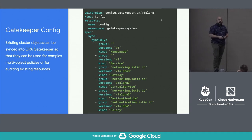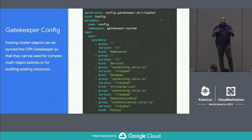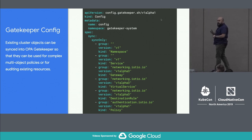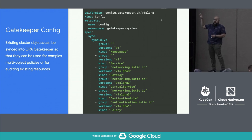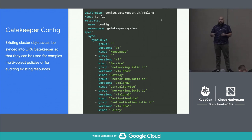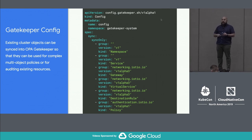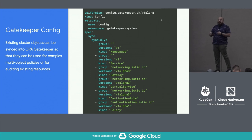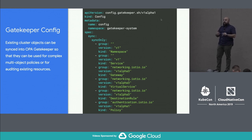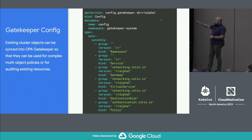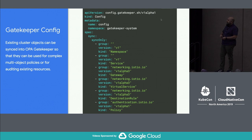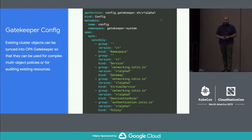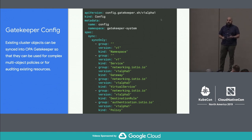There's one more piece to this puzzle: you've got to tell Gatekeeper how to capture some of these objects. To use the namespace selector, you've got to make sure you're synchronizing the data about namespaces into the Gatekeeper system namespace, so the Gatekeeper controller is basically caching the metadata about any of these objects. For multi-object policies, or situations where you want to audit something after it's been admitted, Gatekeeper configuration needs to know about it. Typically you'll sync namespace, service, pods, deployments — in this case, I added a few extra lines for Istio APIs.